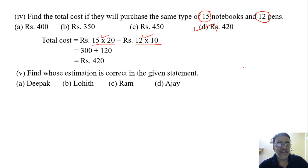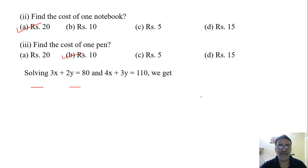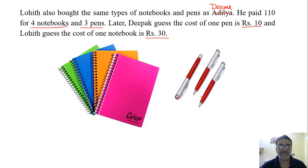Now the fifth one is very interesting. Find whose estimation is correct in the given statement. Ram guessed that 1 notebook is 25 rupees. And Ajay guessed that 1 notebook is 16 rupees. And Lohit guessed that the cost of 1 notebook is 30. And it was Deepak only estimated the cost of 1 pen as 10 rupees. I will go back to the statement.